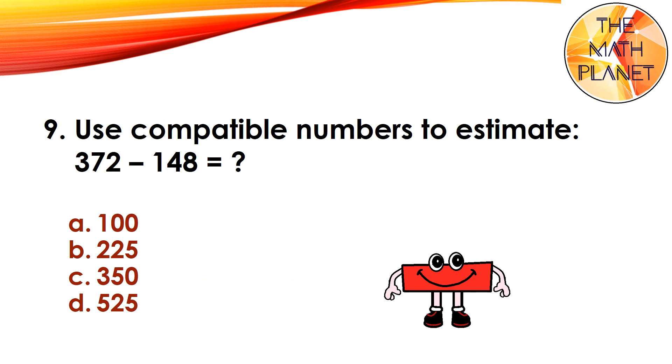Question 9. Use compatible numbers to estimate 372 minus 148. The correct answer is B because 375 minus 150 equals 225.